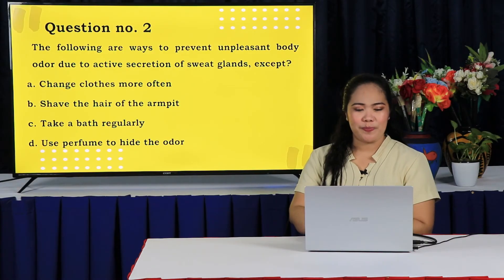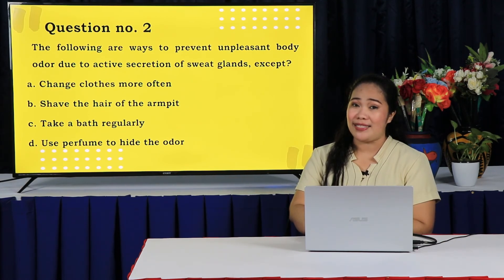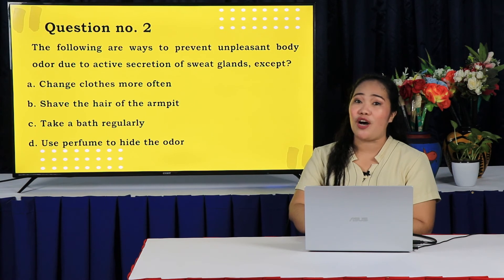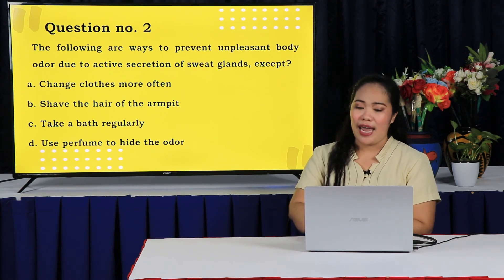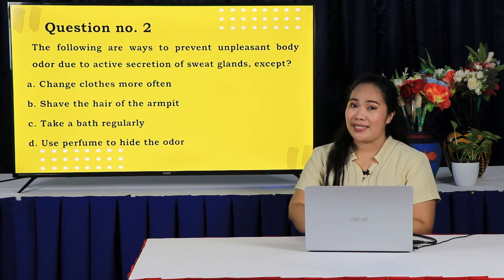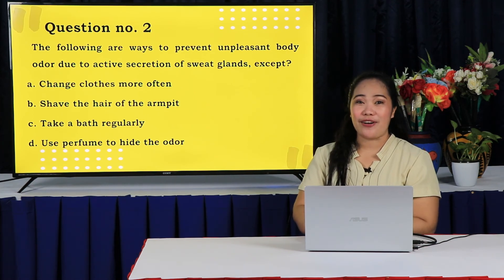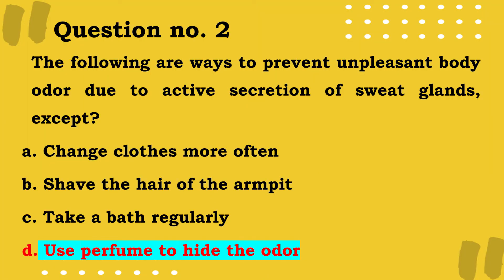Question 2: The following are ways to prevent unpleasant body odor due to active secretion of sweat glands, except: A. Change clothes more often. B. Shave the hair of the armpit. C. Take a bath regularly. D. Use perfume to hide the odor. The correct answer is Letter D, use perfume to hide the odor.